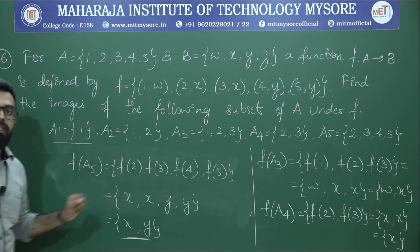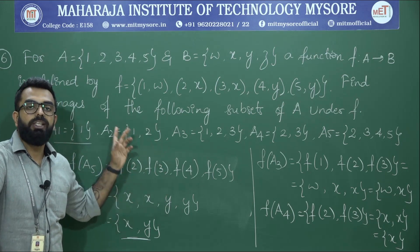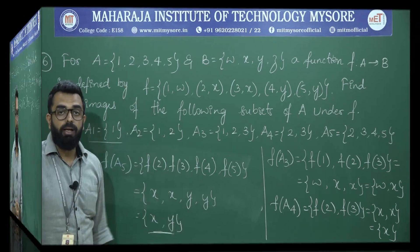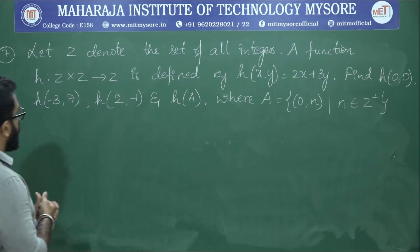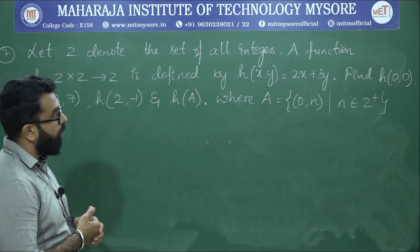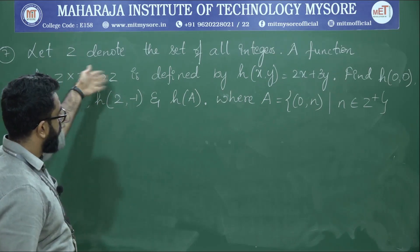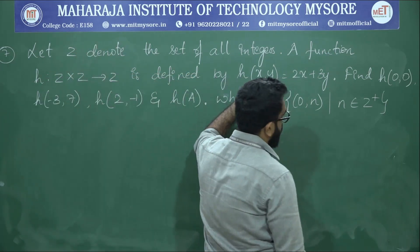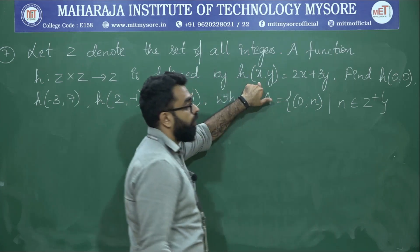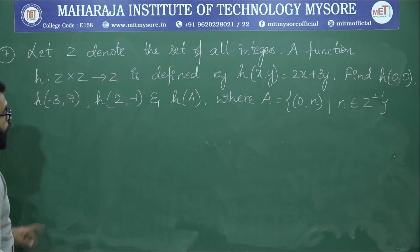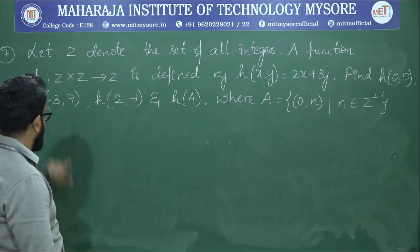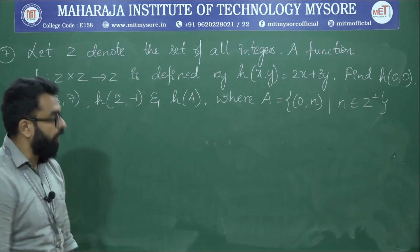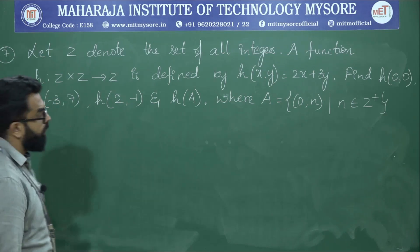Those are the images of subsets A1 through A5 of set A. Next, consider a new problem: let Z denote the set of all integers. A function h from Z to Z is defined by h(x, y) = 2x + 3y. We are asked to find h(0,0), h(-3,7), h(2,-1), and h(A).